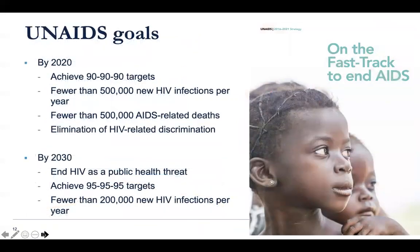UNAIDS has its own goals that complement PEPFAR's. They're attempting to achieve the 90-90-90 goal targets with fewer than 500,000 new HIV infections per year, fewer than 500,000 AIDS-related deaths, and elimination of HIV-related discrimination. Note that this says AIDS-related deaths specifically — which is different from PEPFAR. By a decade from now, the vision is to eliminate HIV as a public health threat, achieve the 95-95-95 targets, and have fewer than 200,000 new infections per year.